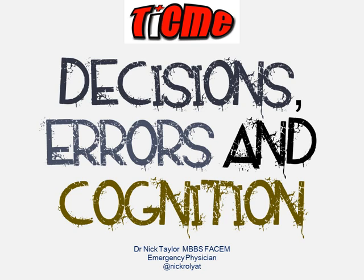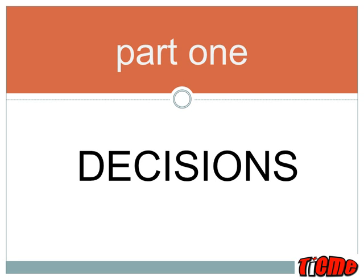Today's tutorial is one that I really have a lot of interest in and it's about decision errors and cognition. We're going to break this tutorial up into three easily digestible parts. Today's is part one and we're going to learn about how we make decisions.